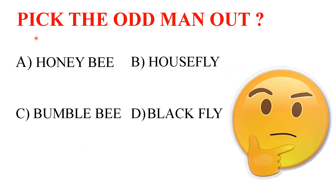Have you ever seen this type of question? Pick the odd man out. Option A: honeybee. Option B: housefly. Option C: bumblebee. Option D: blackfly. I asked the same question to my friends.